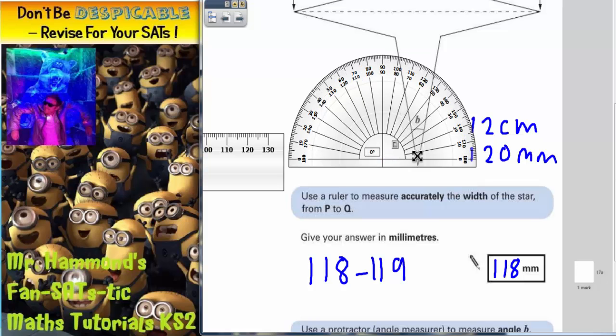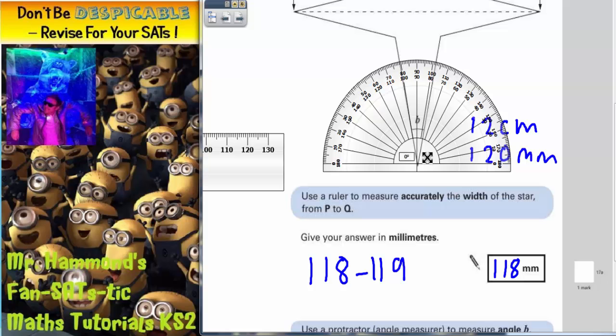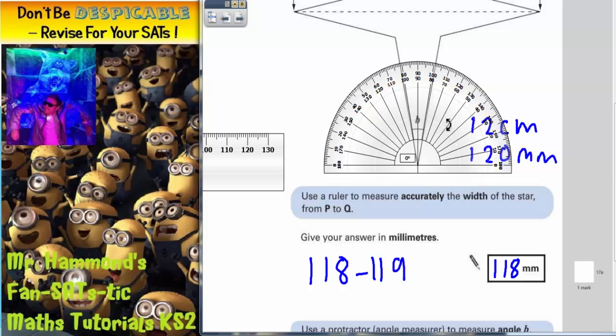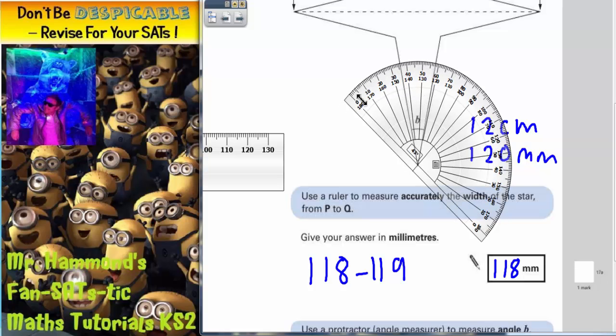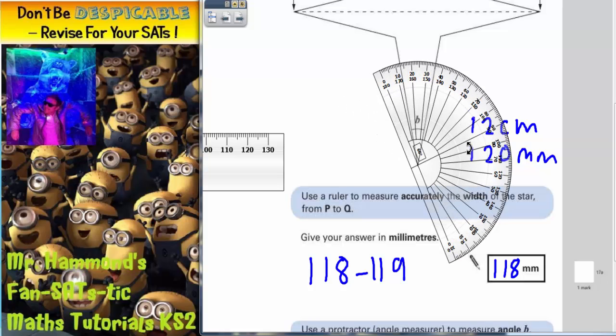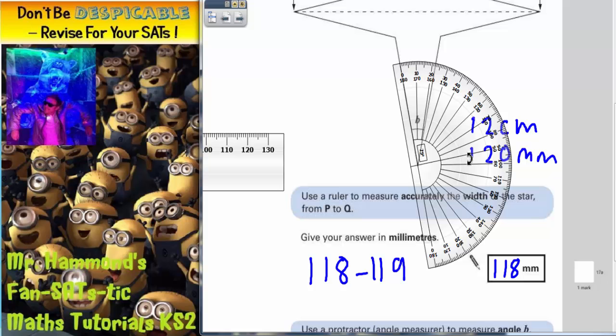Then you must rotate the angle measurer so that the zero line is on one of the lines. So you could do it like that.